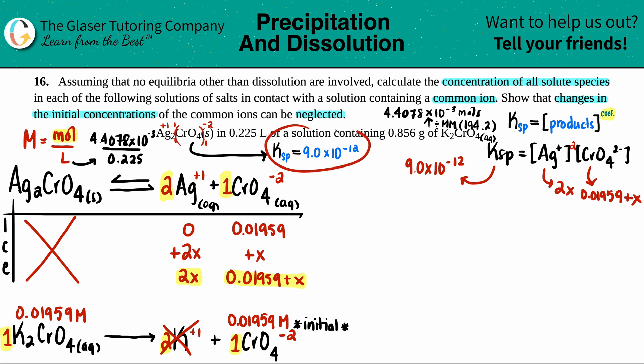We take these equilibrium values and plug them into our equation. Ag is 2x and this is 0.01959 plus x. Here's where this change can be neglected. Since this Ksp value is so small, times 10 to the negative 12th, whatever you started with, the change is probably not going to budge this number. We can assume the equilibrium concentration is probably this and we don't care about that plus x.